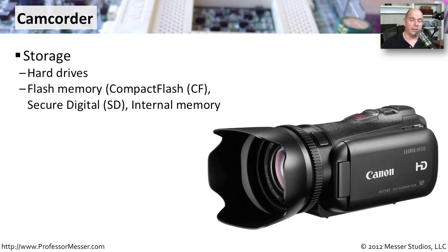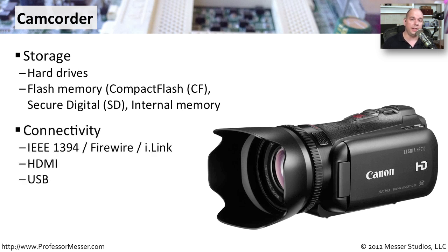For more advanced video capabilities, you might want to consider a camcorder. This is a device that is able to store a large amount of video on a single device, usually in flash memory, though sometimes it's a hard drive built into the device. It often has much more storage capability than a smartphone. When you're ready to transfer that video off the camera, you can use FireWire, a direct HDMI connection to display video on a screen, or simply plug into a USB connection on the camcorder.